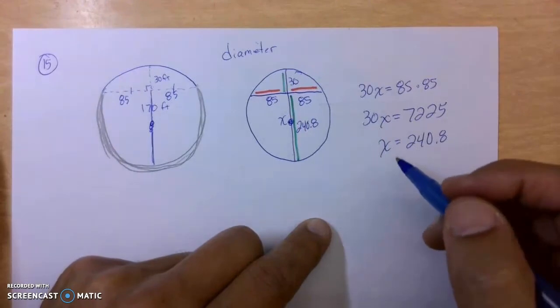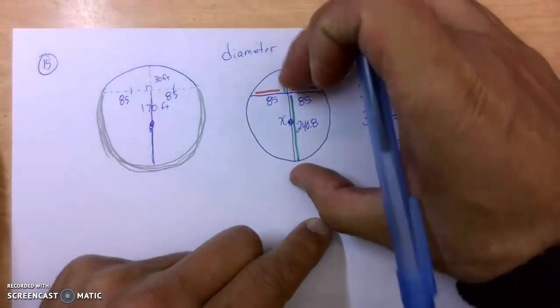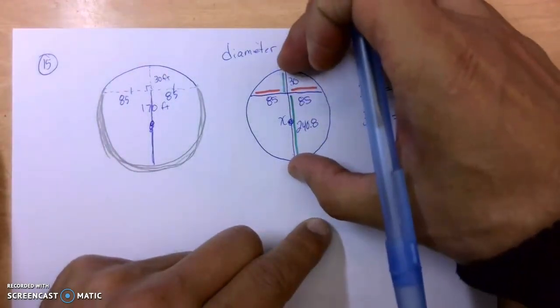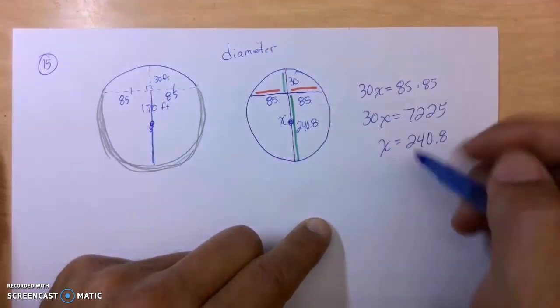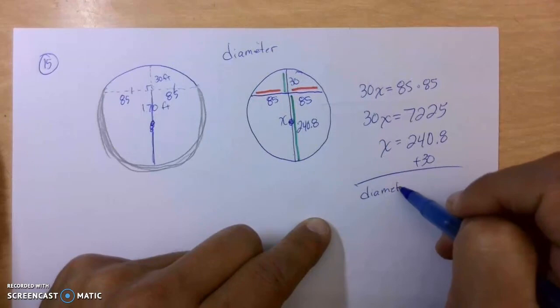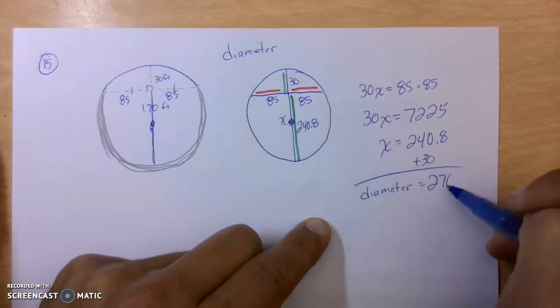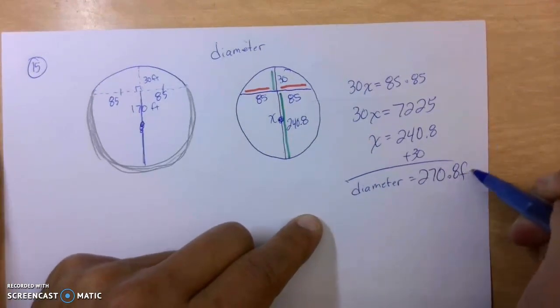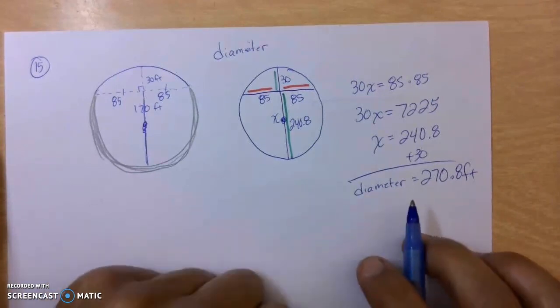But they want to know the diameter. Diameter is all the way to the edge. Not just here to here. All the way to one edge of the circle to the other edge. So we're going to add the 30 there. And so the diameter is going to equal 270.8 feet for number 15.